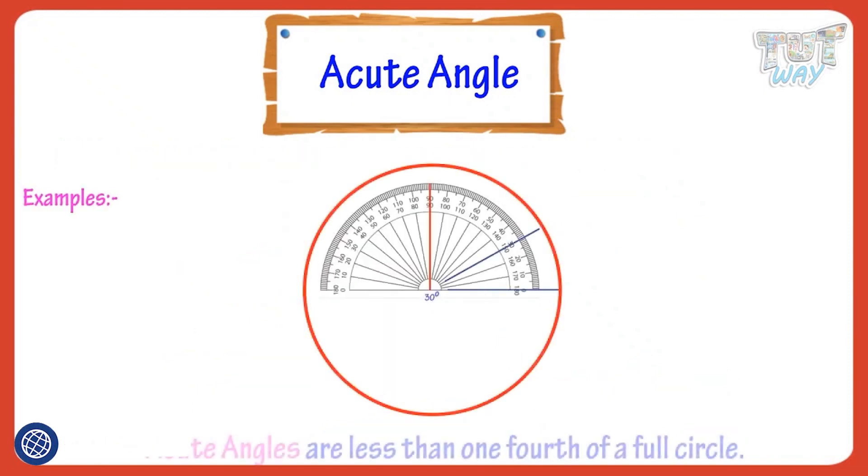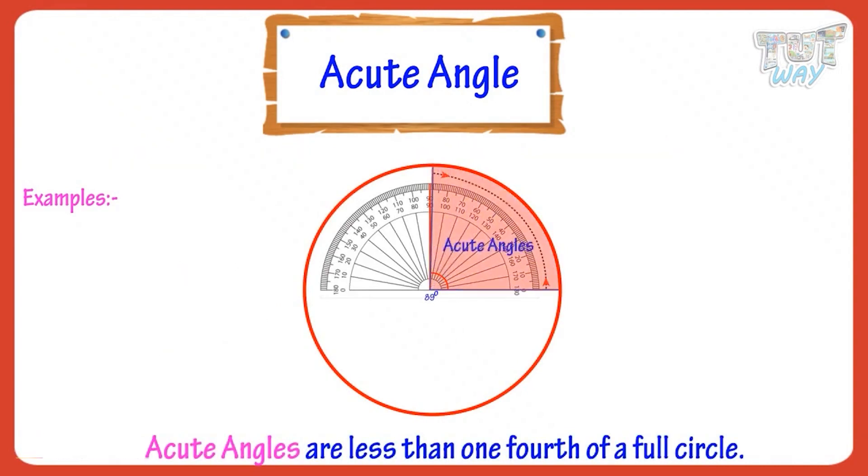So kids, acute angles are less than one-fourth of a full circle. Now let's see what is a right angle.